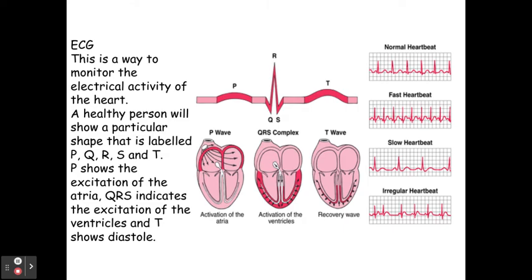If you have ventricular fibrillation, you're going to see a lot of QRSs on the trace. If you have atrial fibrillation, you'll get a very indistinct P wave — you really can't tell where the P wave is.